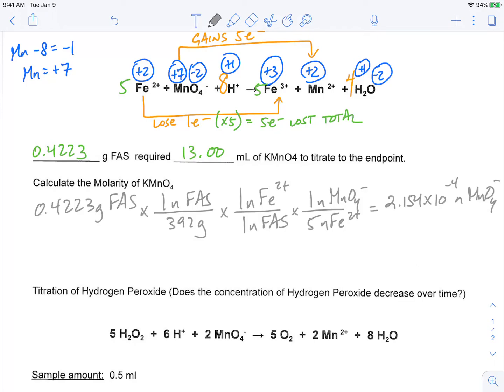Now to calculate the molarity, we know that molarity equals moles over liters. So I'm going to take my moles, 2.154 × 10^-4 moles, divided by our volume, but we want to change it from milliliters into liters. So 13 milliliters is 0.01300 liters. And then doing our calculation, we get 0.01657 molar permanganate ion. We're just thinking about it as the MnO4- ion.